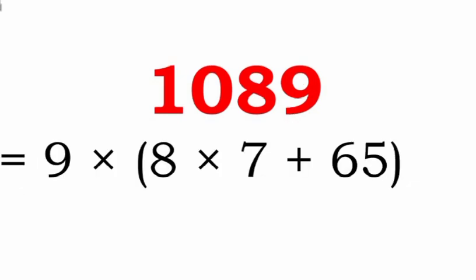This is the next representation of 1089 where the digits 9, 8, 7, 6, and 5 are used, and we can write it as 9 into 8 into 7 plus 65.